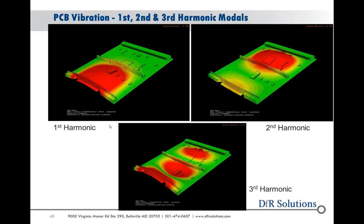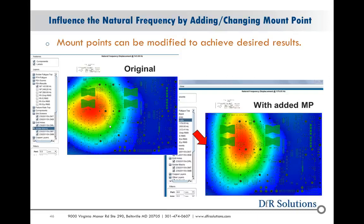You can show examples of natural frequencies and make changes. If the natural frequency is relatively low — say 143 hertz — and you're creating a lot of deflection near a sensitive component, you may decide to add a mount point. Adding one increases the natural frequency to almost 180 hertz and moves the deflection point to another area with less fragile components. These are things you can do virtually without having to build product. You can learn a lot doing this and lay out the board in a more educated manner.